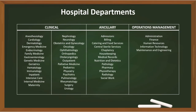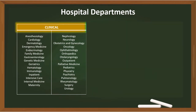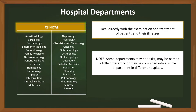Hospital departments can be divided into different types. In this video, we'll group the departments into three types: namely clinical, ancillary, and operations management. Clinical departments deal directly with the examination and treatment of patients and their illnesses. Take note that some departments may not exist, may be named a little differently, or may be combined into a single department in different hospitals.